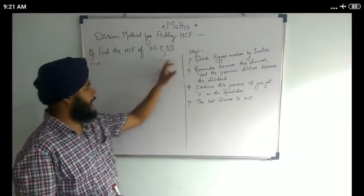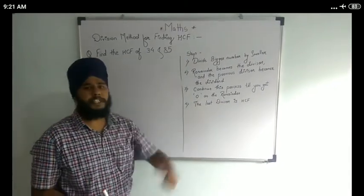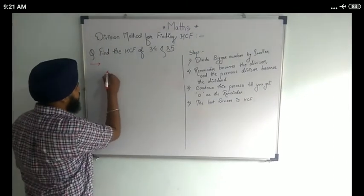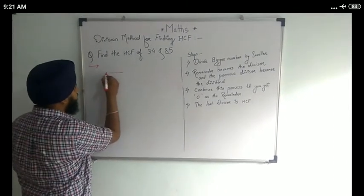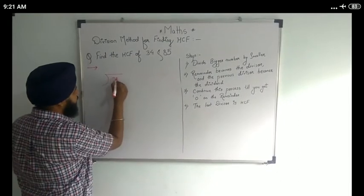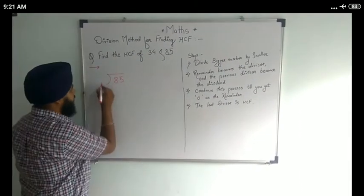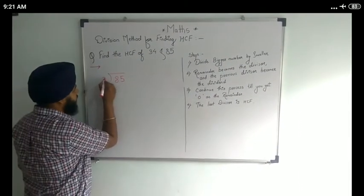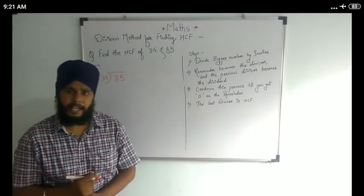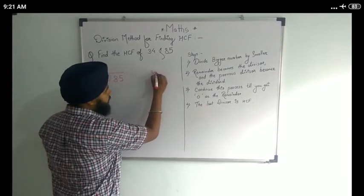Now, 34 and 85. We know that 34 is the smaller number and 85 is the bigger number, so we will write it in division form. The bigger number is our dividend, so it is written here as 85. And 34 is smaller, so this is the divisor. We are going to divide 85 by 34.